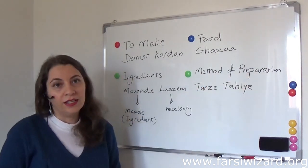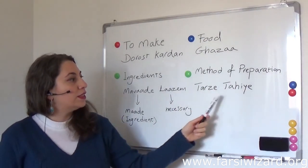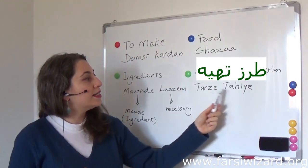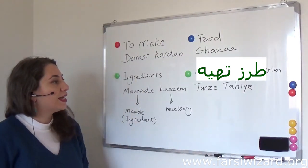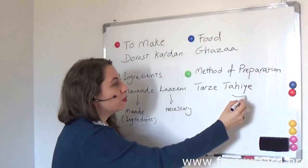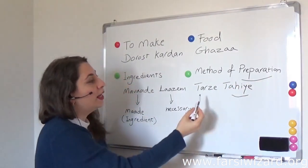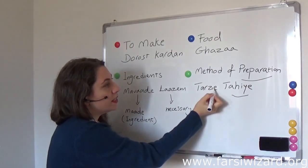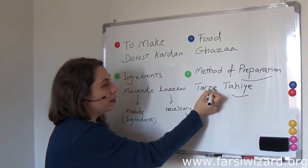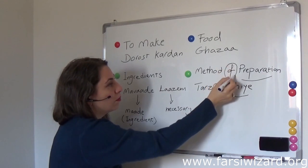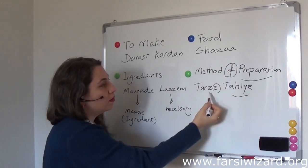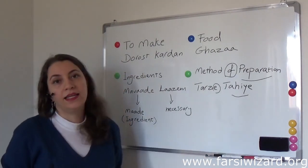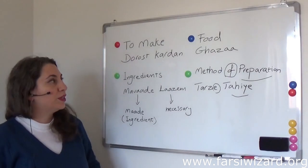Method of preparation — this is actually quite straightforward for us. It is 'tarze tahiyyeh.' 'Tahiyyeh' means preparation, and 'tarz' means method. The 'e' you see connecting them is a linking particle. So 'tarze tahiyyeh' means method of preparation or method of elaboration.